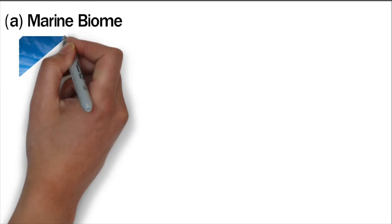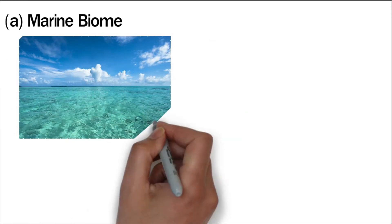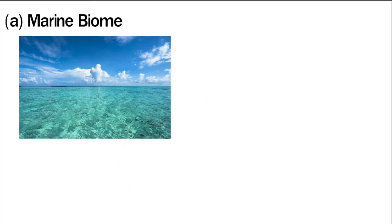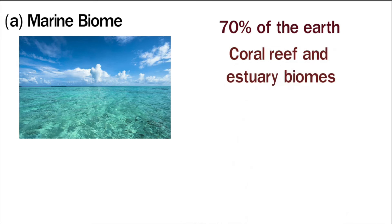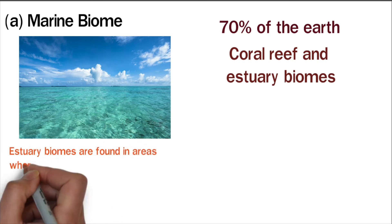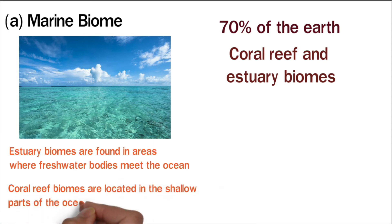Marine biome: This is the largest biome on the planet. The marine biome consists of all the oceans in the world and is defined by saltwater conditions. The ocean biome covers 70% of the earth. Coral reef and estuary biomes are also part of the marine biome. Estuary biomes are found in areas where freshwater bodies meet the ocean. Coral reef biomes are located in the shallow parts of the ocean, especially near the tropics. Corals provide shelter to different species of marine animals.